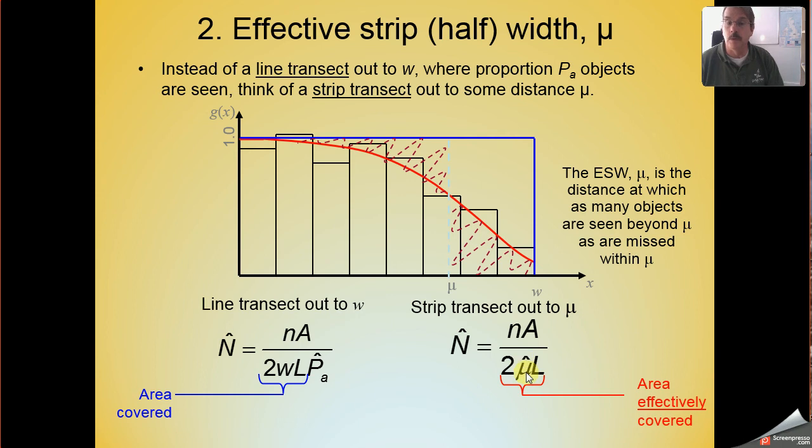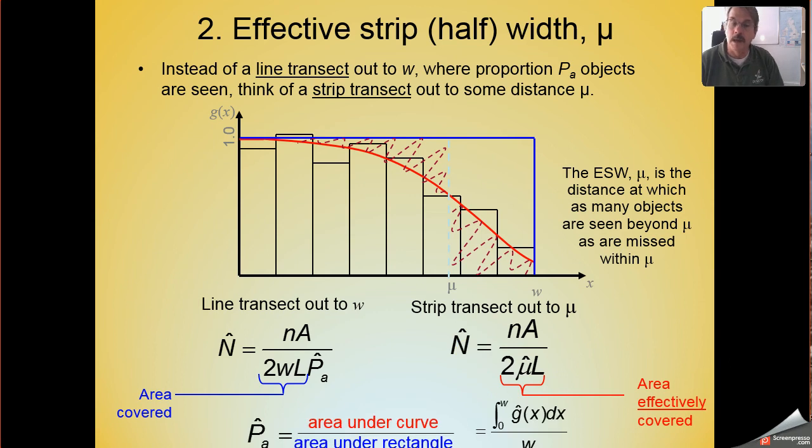So if we could estimate this quantity mu hat, that allows us to estimate the quantity n hat. And so we're reminded that P sub a was this area under the curve divided by the area under the rectangle. I'm now asking you to recognize that mu hat is equal to this area under the curve, the integral of our detection function g(x) between 0 and w.